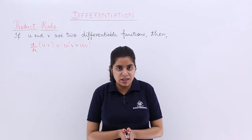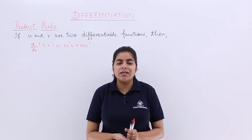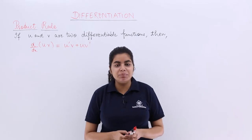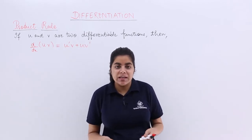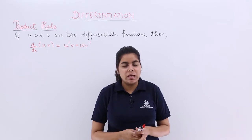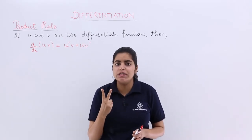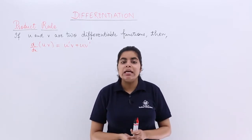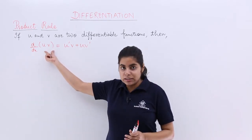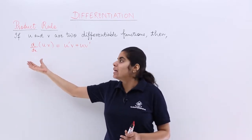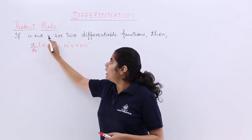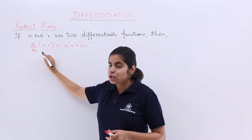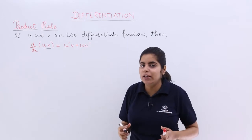In this video, let's see the product rule, which comes under the topic of algebra of derivative of functions. The product rule is also called the Leibniz rule, which you have already done in class 11. We are just recapitulating what the product rule is. Basically, if there are two or more differentiable functions multiplied together, the differentiation of the product follows a specific formula. If u and v are two differentiable functions, we look at the differentiation of their product — the multiplication of u and v.